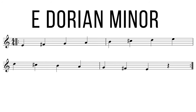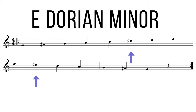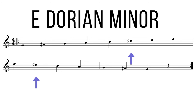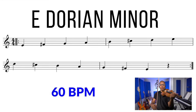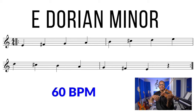Let's try the E Dorian scale. Remember to raise the sixth degree of the natural minor scale — the sixth degree of E natural minor is C, so we raise it to C sharp. The notes of E Dorian are E, F sharp, G, A, B, C sharp, and D. Let's play — one, two, ready, play.